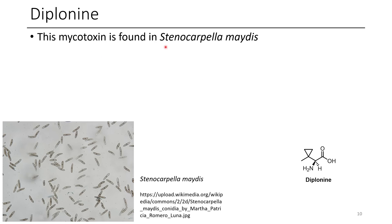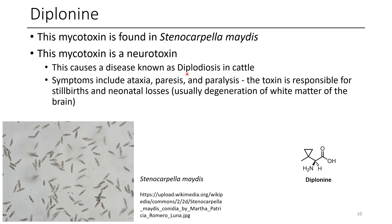The next one is diplianine, found in Stenocarpella mitis — we can see a microscope image of that here. This is an interesting looking molecule because it has yet another cyclopropane. This mycotoxin is a neurotoxin, meaning a lot of bad stuff happens. It causes a disease in cattle known as diplodiosis. Symptoms include ataxia, paresis, and paralysis. If a pregnant animal consumes this, it will cause stillbirths and damage the brain of unborn offspring.